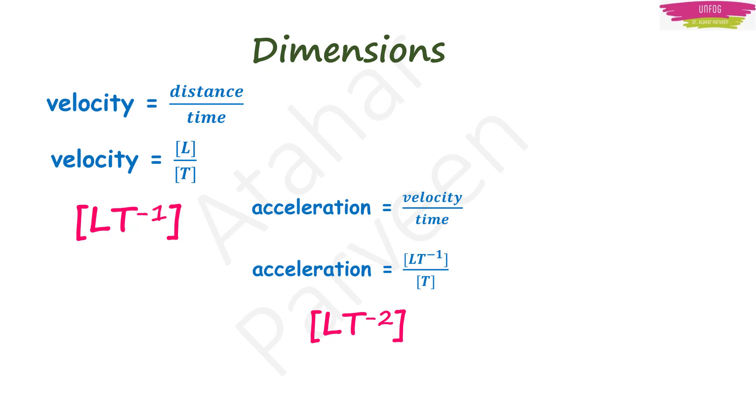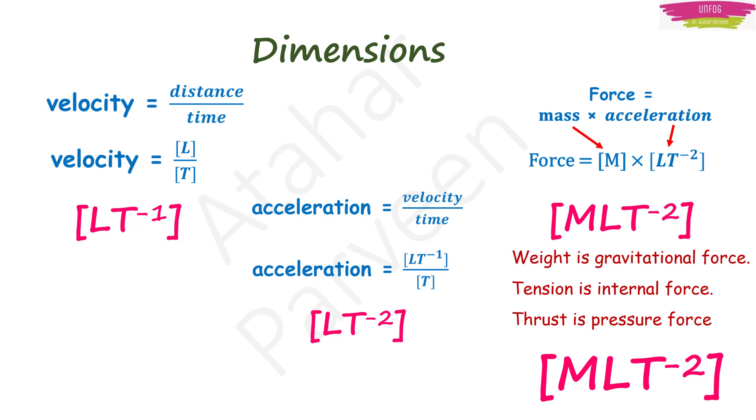Similarly, for acceleration, it is velocity upon time. Just now we saw that the dimensional formula for velocity is L T minus 1. So dimensional formula for acceleration will become L T raised to minus 2. In the same manner for force, which is equal to mass into acceleration, just write their dimensional formula and multiply. So M L T raised to minus 2 becomes the dimensional formula for force and so will be for weight, tension and thrust because they are all type of forces.